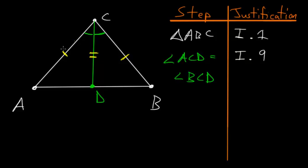And then the angles between these two lines that they share in common are equal as well. So we can use Book 1, Proposition 4, which is essentially the Side-Angle-Side Theorem, to prove that these two triangles are exactly the same.